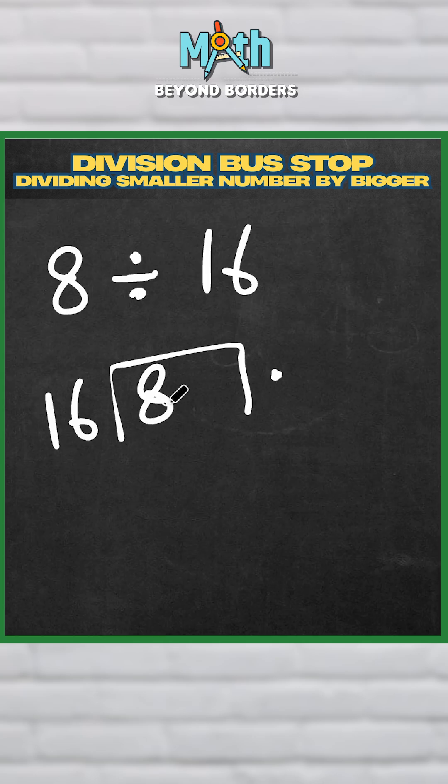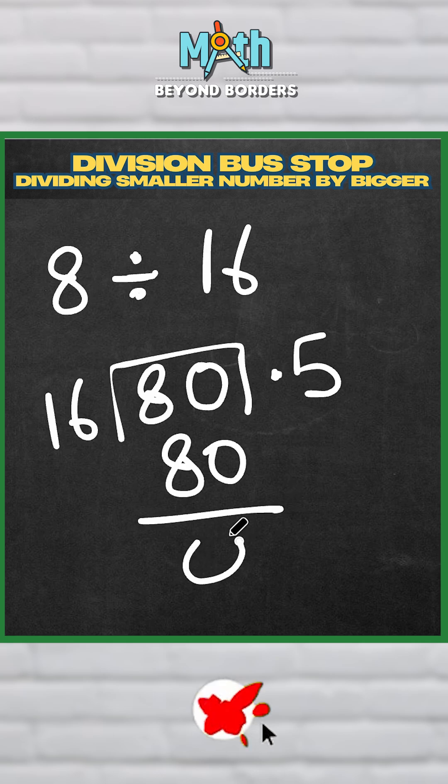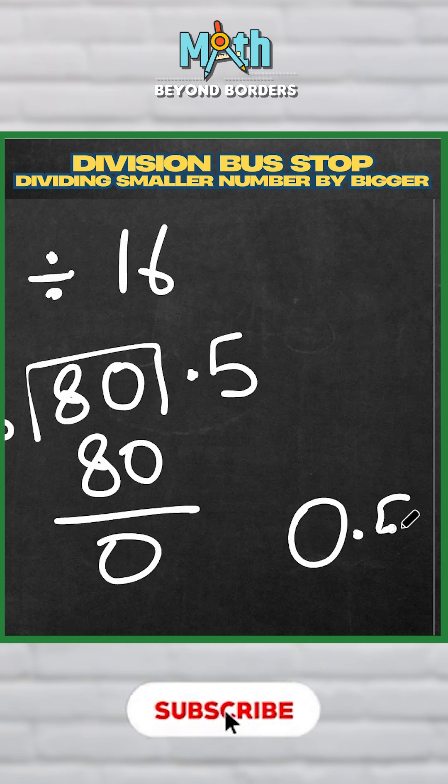Tell me, tell me. This will become 80. You guessed it right! 16 times 5 is 80, so my answer is 0.5.